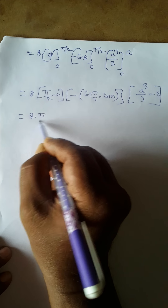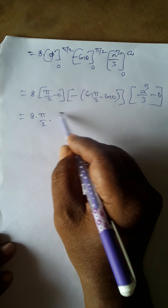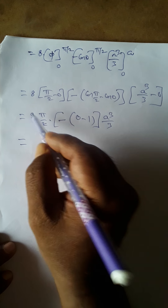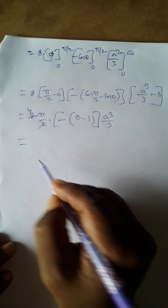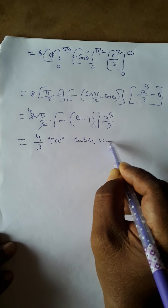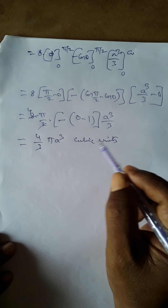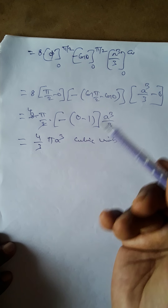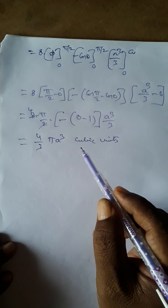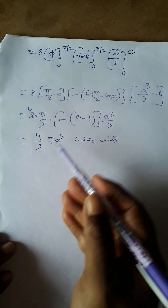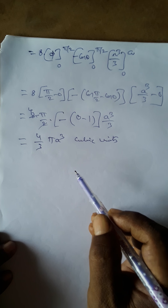So: 8 × (π/2) × (−0 + 1) × (a³/3) = 8 × π/2 × a³/3 = 4πa³/3 cubic units. We already know the formula for the volume of a sphere is (4/3)πr³, and here r means a, so the answer is (4/3)πa³ cubic units.